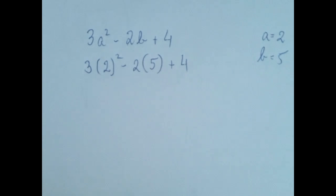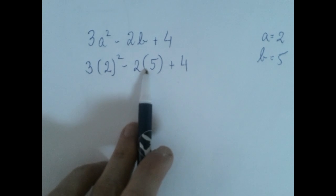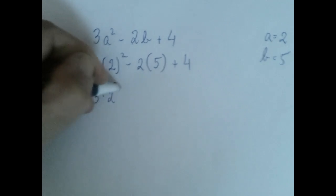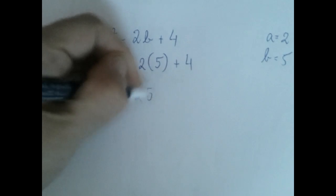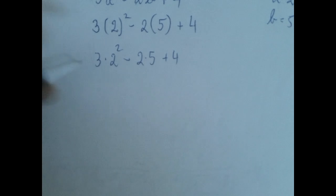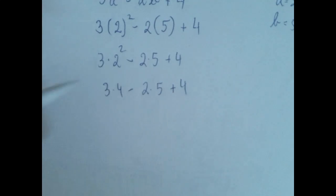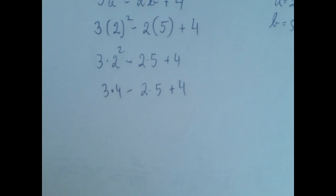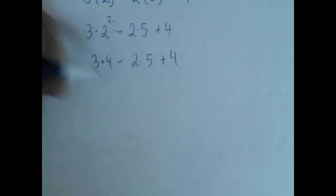And now this is an order of operations problem. This is multiplication, this is multiplication. So what we have is 3 times 2 squared minus 2 times 5 plus 4. So exponentiation is first. So we now have 3 times 4 minus 2 times 5 plus 4. Now multiplications left to right.